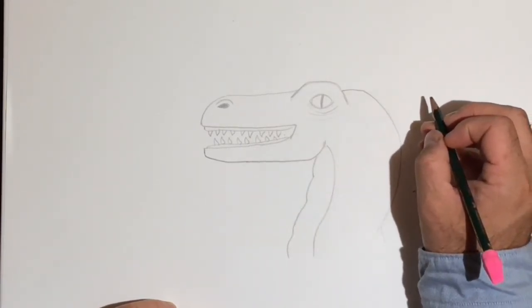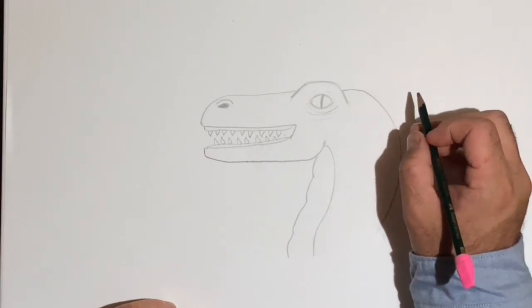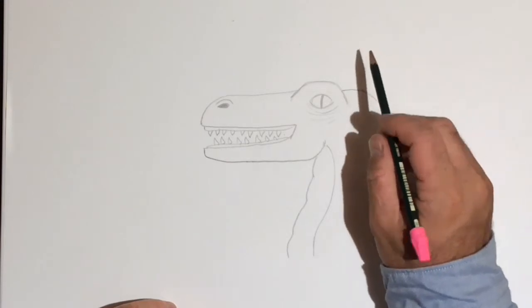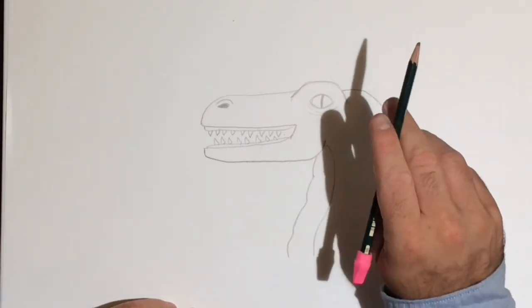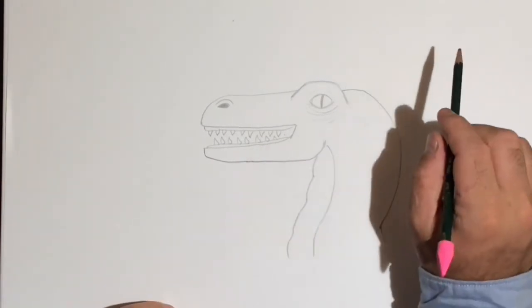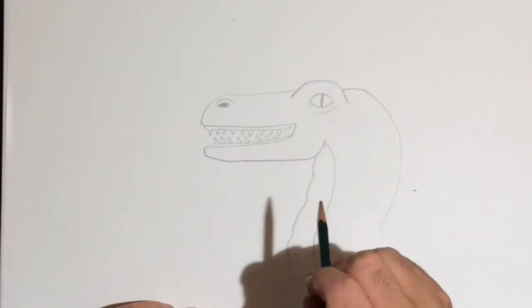Okay, now some details to finish it out. I think this might be some other kind of meat-eating dinosaur. I think a T-Rex maybe has a bigger head, so let's say this is something like a Raptor or something.